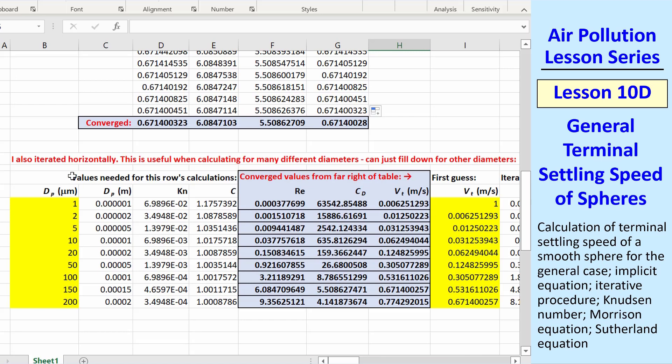Now I'll show you the horizontal calculations. Our example dp was 150 microns. I convert to meters, calculated Knudsen number, and Cunningham correction factor. These converged values refer to cells way on the right.